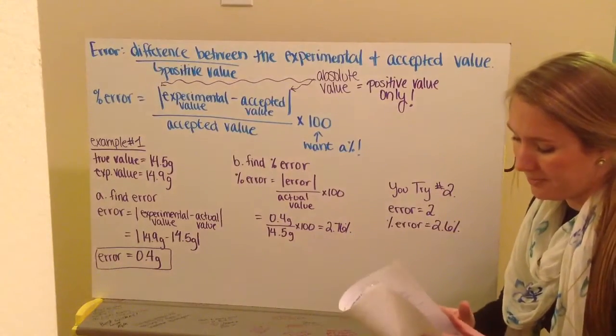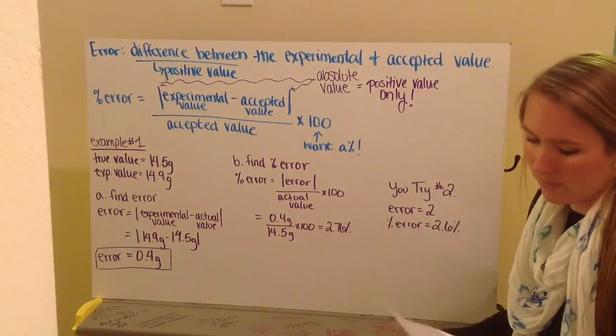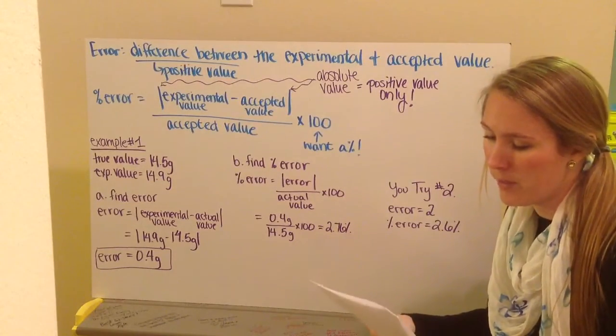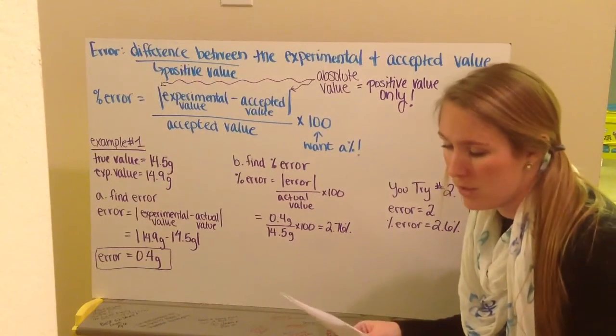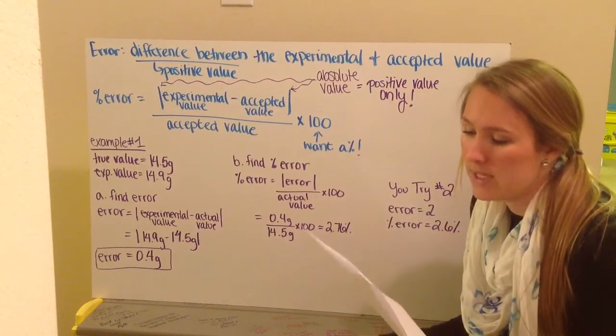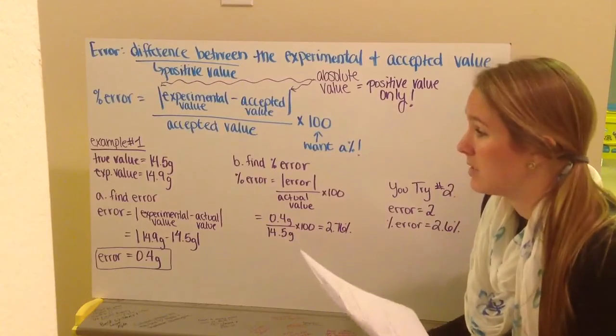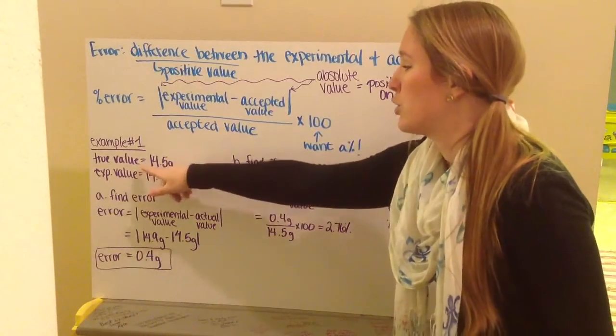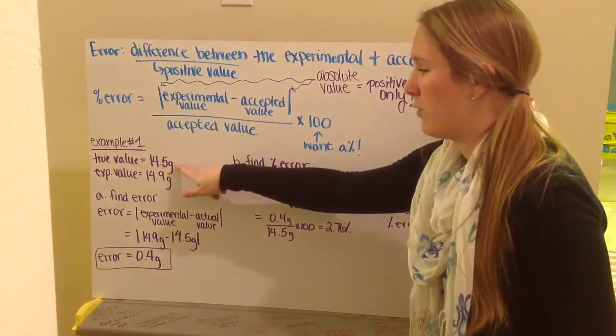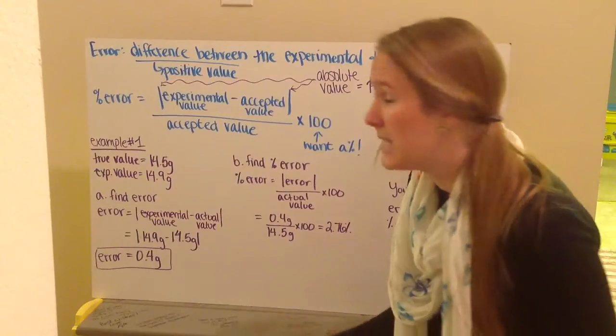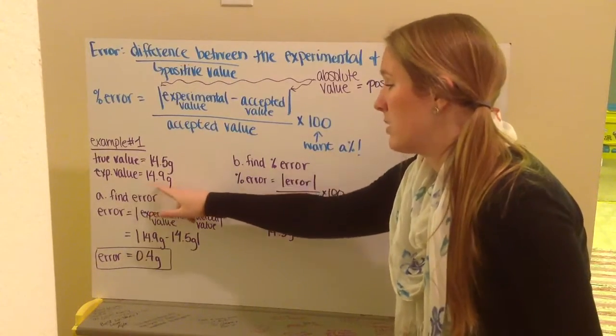Example number one. A sample of carbon has a true value of 14.5 grams. But when you measure it, you get that the carbon has a mass of 14.9 grams. What is the error of this measurement? Well, we write down what's given to us. We're told our true value is 14.5 grams. Our experimental value, what you actually did, was you measured it to be 14.9 grams.